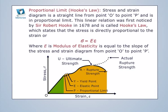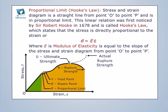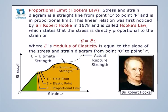Looking at the stress-strain diagram, the graph is a straight line from point O to point P — this is the proportional limit. This linear relation was first noticed by Sir Robert Hooke in 1678 and is called Hooke's Law, which states that stress is directly proportional to strain, expressed as sigma equals E times epsilon, where E — the modulus of elasticity — is equal to the slope of the stress-strain diagram from point O to point P.